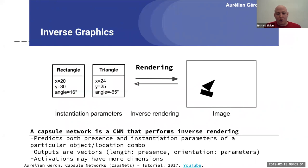Our goal in these analyses is going to be doing this inverse rendering process. The outputs are vectors that encode both the presence and the parameters — they can be the orientation, skew, size, or thickness. The activations can have as many dimensions as we want.